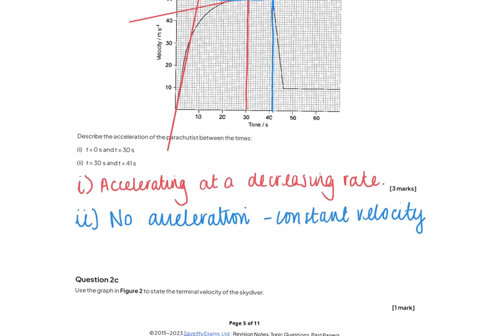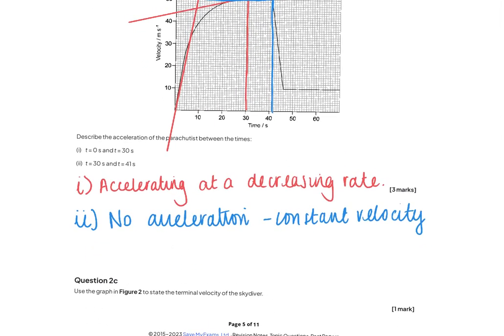Question 2c: the terminal velocity. This is the highest velocity reached. Reading from the graph, the skydiver reaches 50 metres per second.